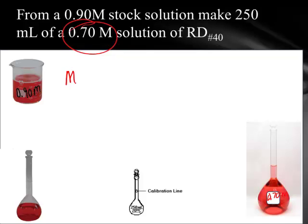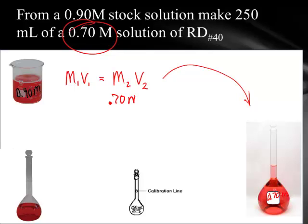So remember, I'm going to use this equation: the molarity that we start with times the volume that we start with equals the molarity that we end with times the volume that we end with. We know this molarity and volume. We know the molarity we want in this flask right down here — that molarity is 0.70 molar — and we know the volume of that flask is 250 milliliters. And I know the molarity of this beginning solution is 0.90 molar.